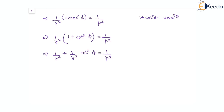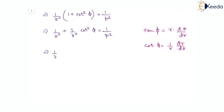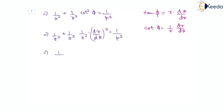We have already learned that tan(φ) = r·dθ/dr, so cot(φ) = (1/r)·dr/dθ. Using this relation, 1/r²·cot²(φ) becomes 1/r² × (1/r·dr/dθ)² = 1/r⁴·(dr/dθ)². Therefore, 1/p² = 1/r² + 1/r⁴·(dr/dθ)², which is another key relation.